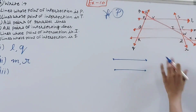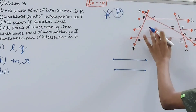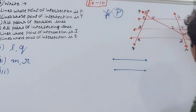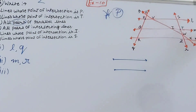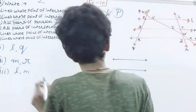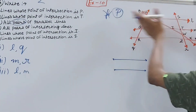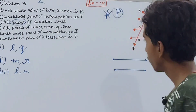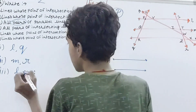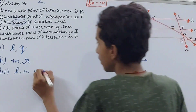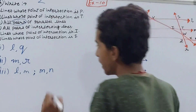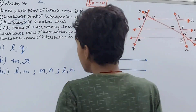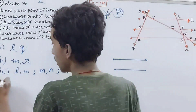Looking at the figure, it's like a railway track — some lines run parallel to each other. Since the question asks for pairs, we name two lines at a time. The pairs of parallel lines are: l and m; m and n; l and n.